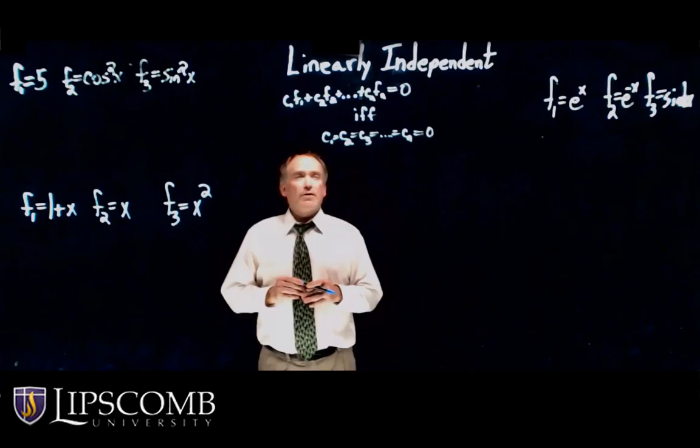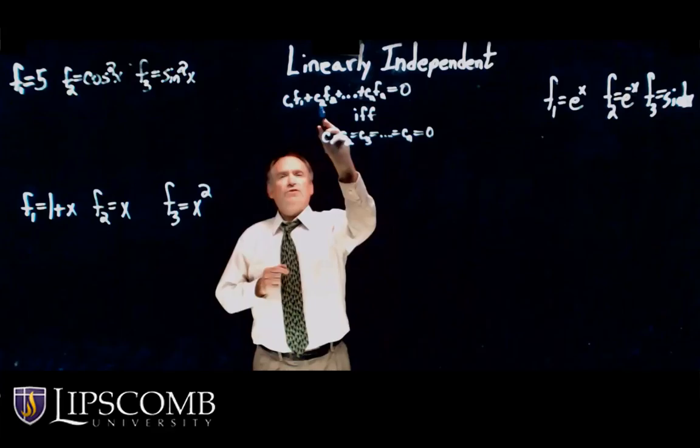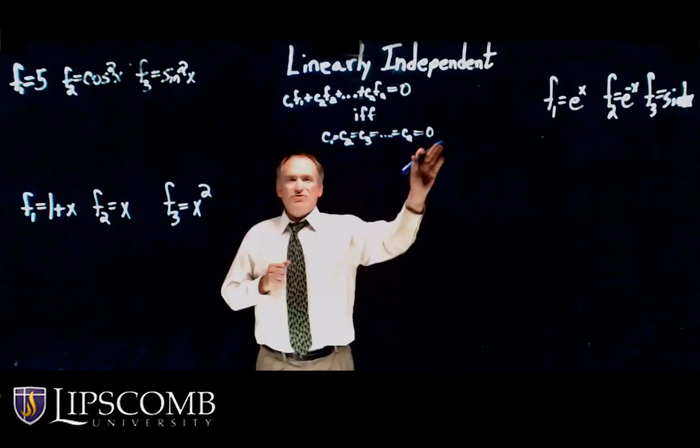To remind you what that means, what we talked about in class, a set of functions f1 through fn are linearly independent if c1 times f1 plus c2 times f2 plus c3 times f3 plus dot dot dot plus cn times fn equals zero if and only if all the c's are zero.